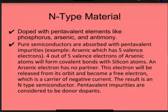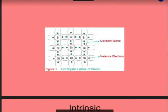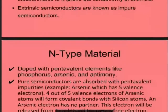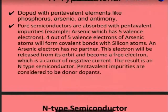In n-type semiconductor, the pure semiconductor is doped with a pentavalent impurity — elements like phosphorus, arsenic, and antimony. These have five valence electrons. Silicon has four electrons, but when we add antimony which has five electrons, there is one extra free valence electron. This extra electron becomes available for conduction.